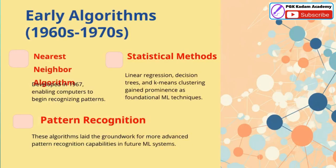The early algorithms from the 1960s and 70s laid the foundation for modern machine learning. The nearest neighbor algorithm, developed in 1967, enabled computers to start recognizing patterns in data. Statistical methods like linear regression, decision trees, and k-means clustering became foundational machine learning techniques during this time. These early pattern recognition algorithms paved the way for the more advanced capabilities we see in today's machine learning systems.